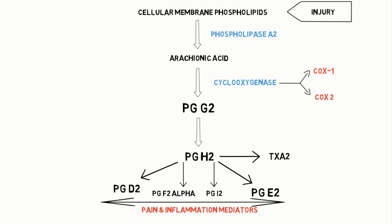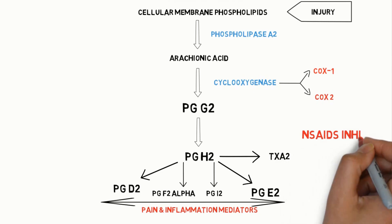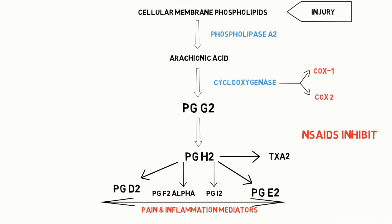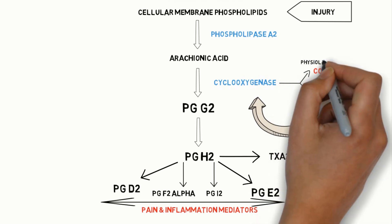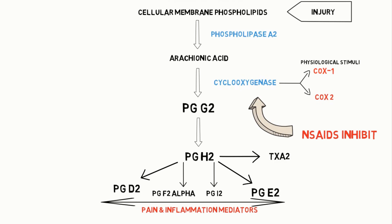NSAID drugs inhibit the synthesis of cyclooxygenase enzyme, which is required to convert arachidonic acid into prostaglandins — the important pain and inflammatory mediators. There are two cyclooxygenase isoenzymes: COX I and COX II. COX I is always present in the body and maintains the GI mucosal lining and kidney functions.